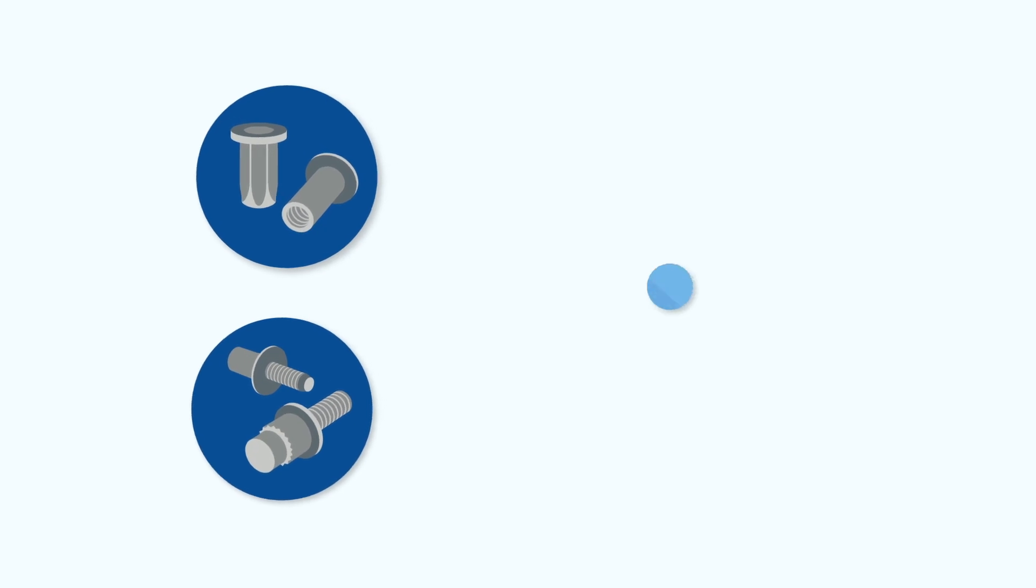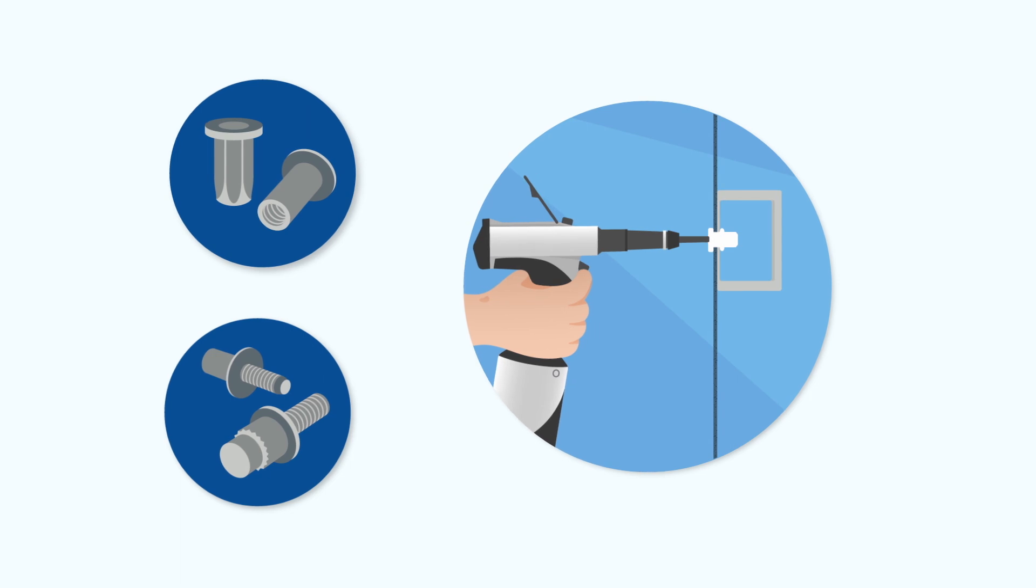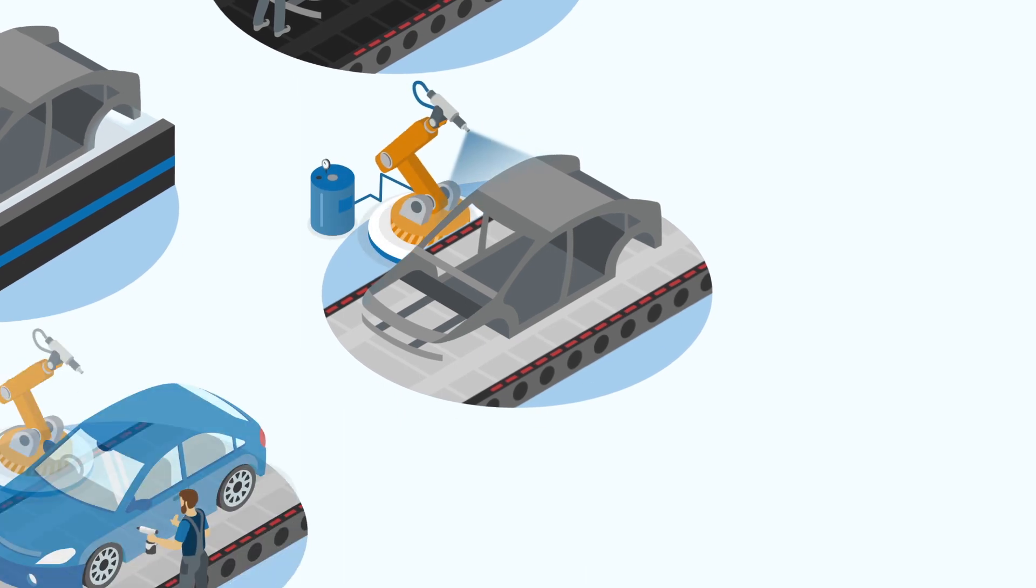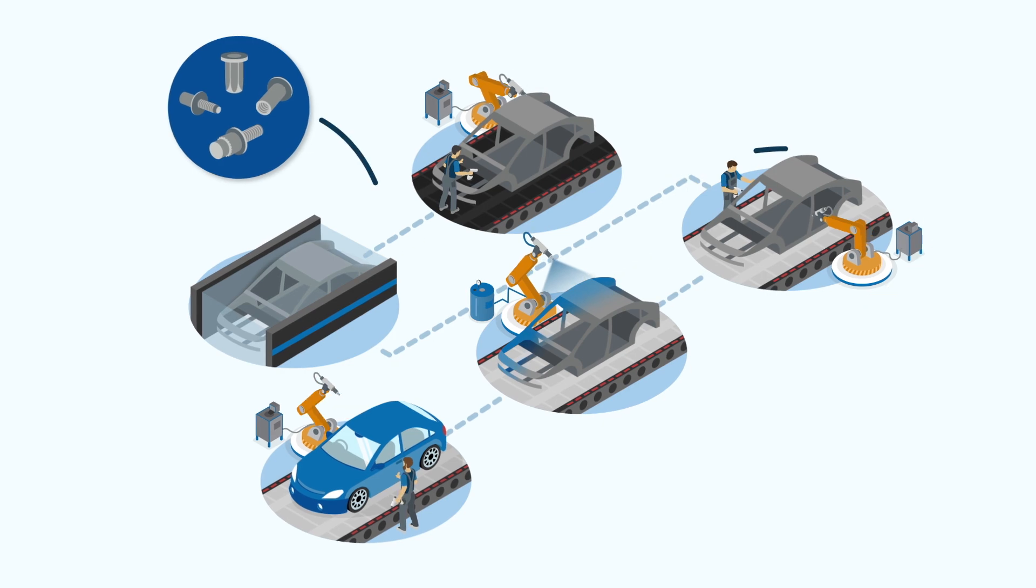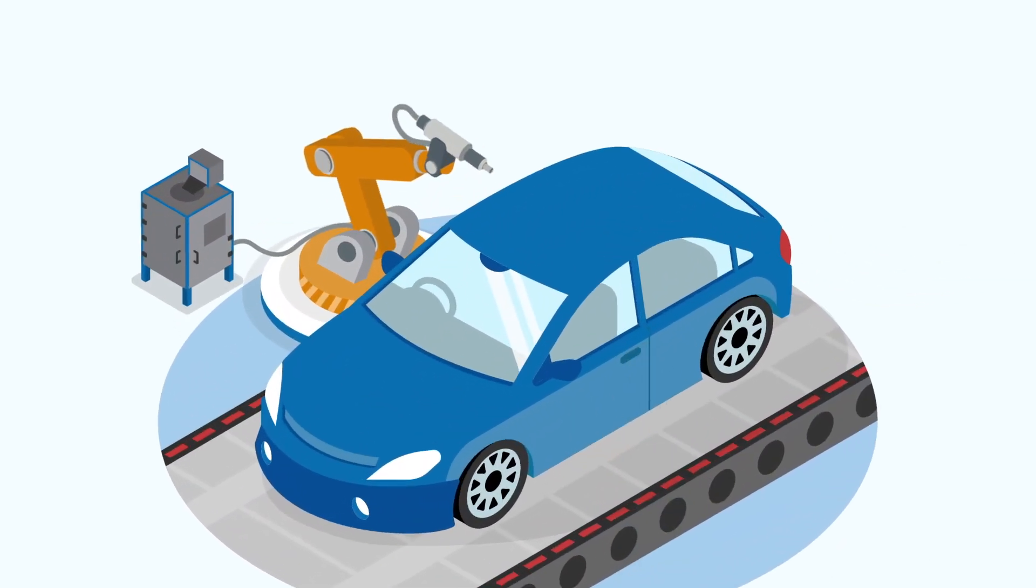RIVCULP line rivet nuts and studs allow installation with access from only one side, either before or after painting or treatment operations. They are compatible with metallic and composite materials and can be integrated at all stages of your production process. The result is a versatile solution for thin materials, with installation solutions ranging from portable tools to fully automated production lines.